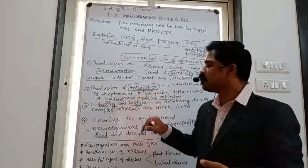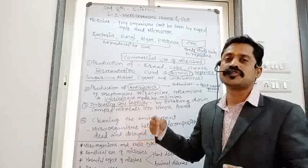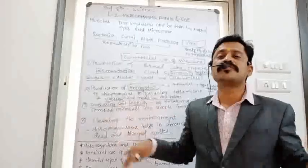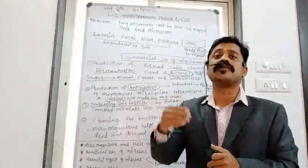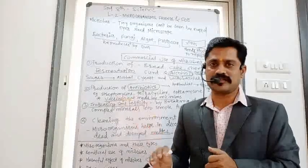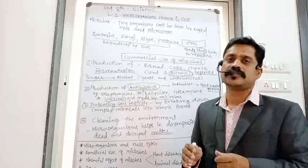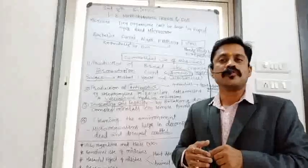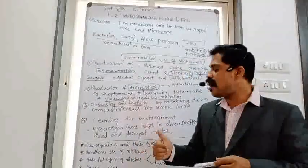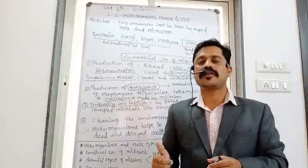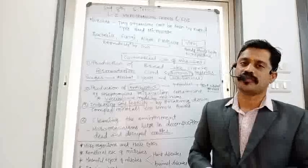To summarize: microorganisms make antibiotics like streptomycin, tetracycline, and teramycin. Vaccines are also made by microorganisms. They increase soil fertility and act as cleaning members of the Earth by decomposing dead bodies of plants and organisms. In the next session we will go over the harmful effects of microorganisms, so make sure to learn all of this.